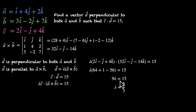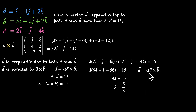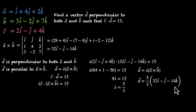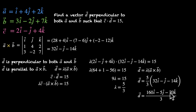Now we know the multiplier. d equals lambda times (a cross b), which is 5 over 3 times (32i minus j minus 14k), giving us 160i minus 5j minus 70k, all divided by 3. So this is our vector d.